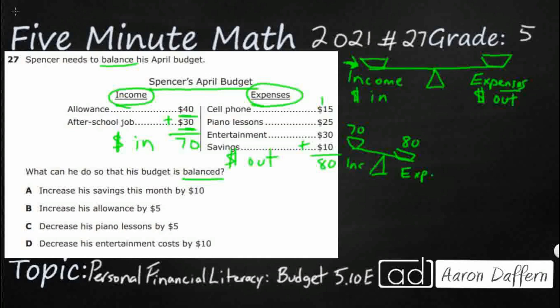The question is, what can you do to balance an imbalanced budget? Let's see what some of our options are. Option A: increase his savings this month by $10. Increase means to get bigger — savings is already $10, so increasing it by $10 would make it $20. That would bring expenses up to $90, making it even more imbalanced. Increasing savings is typically always a good idea, but no — that's going to make it too far out of whack.